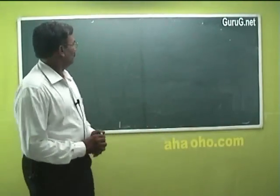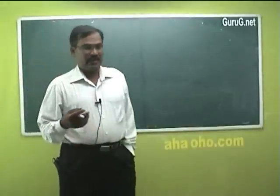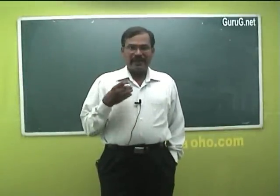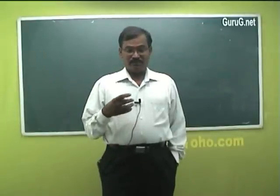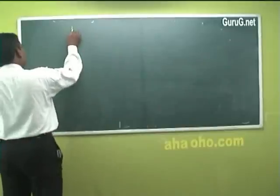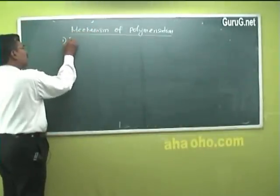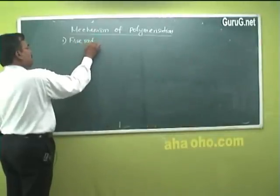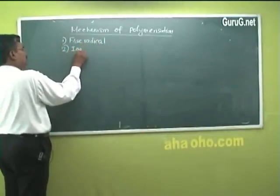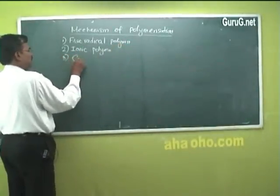Now let us move on to the mechanism of polymerization. We have seen the types of polymerization: addition, condensation, and copolymerization. Now, by what mechanism is polymerization taking place — that is, by what chemical reaction it is carried out? There are three mechanisms of polymerization: free radical polymerization, ionic polymerization, and coordination polymerization.